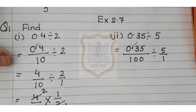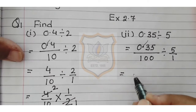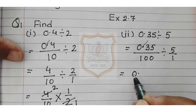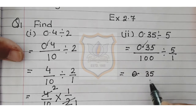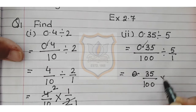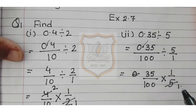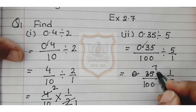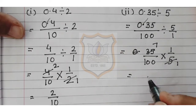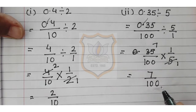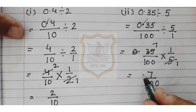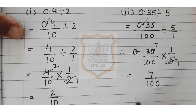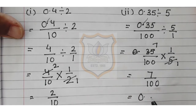That is equal to 35 upon 100, multiplied by 1 upon 5. Computing: 5 ones are 5, 5 sevens are 35. So our answer is 7 upon 100. The denominator has 2 zeros, so the decimal moves 2 digits to the left. That is equal to 0.07. This is our answer.